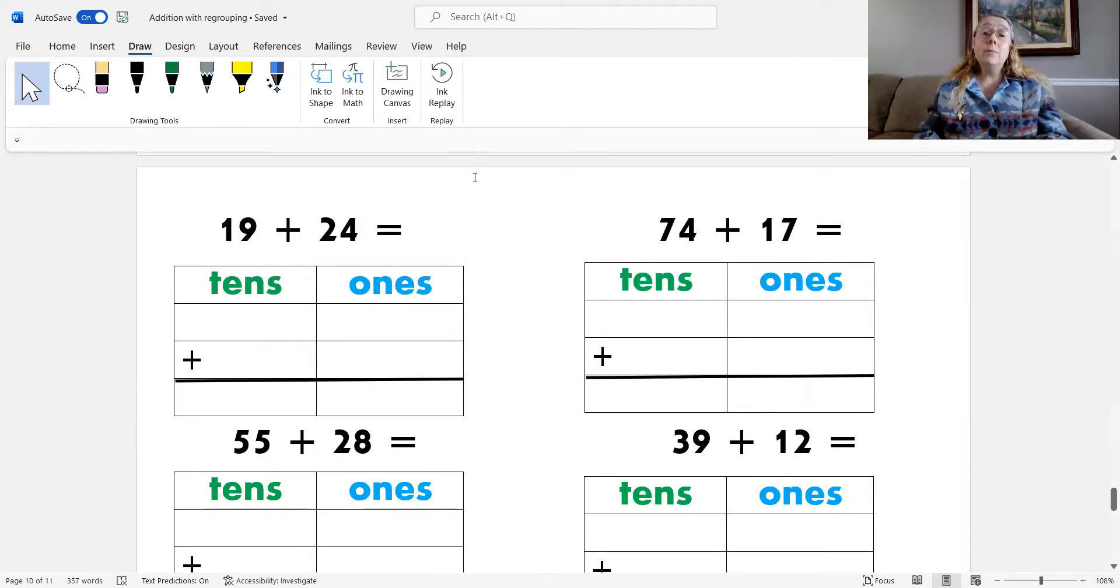19 plus 24. What's our first step? You got it. The first step is to write the problem into the place value chart. Let's do that now. 19 has 1 ten and 9 ones. And 24 has 2 tens and 4 ones.